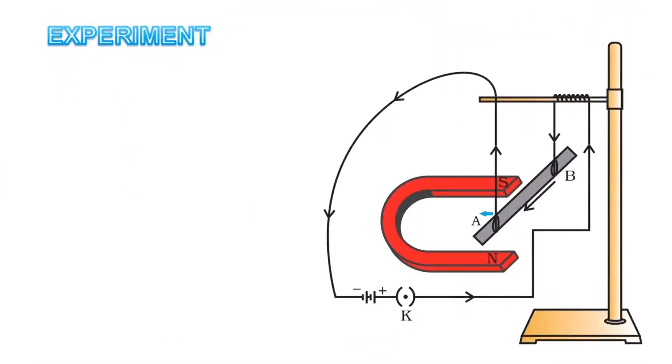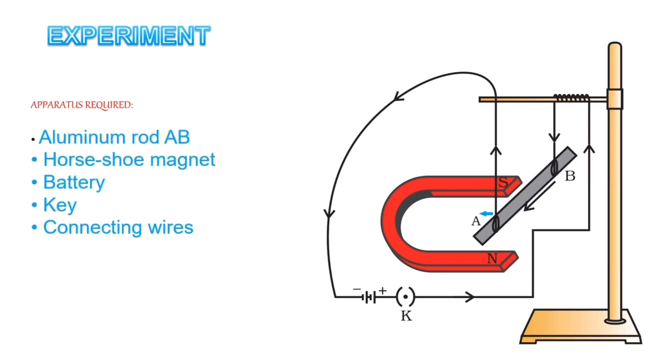You could see a circuit at this particular moment. Consider an aluminum rod AB of about 5 cm, suspended horizontally from a rigid support. This aluminum rod is connected to an external circuit which consists of a battery, a key, and rheostat, all connected in series. Make sure the current flows through the rod AB. We know that when a current passes through the conductor, it produces a magnetic field around it. The aluminum rod acts as a magnet.